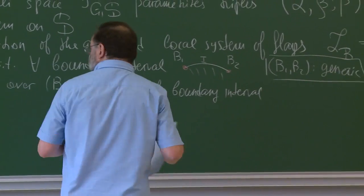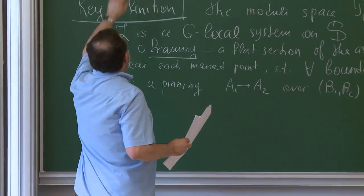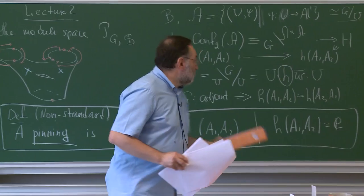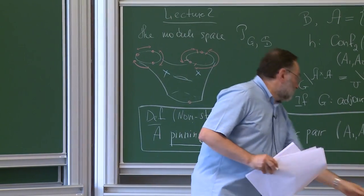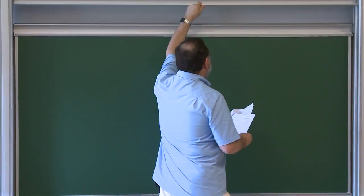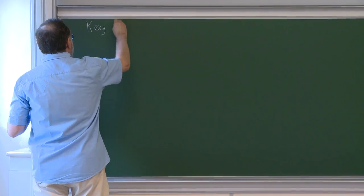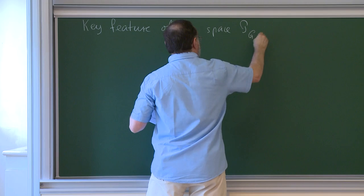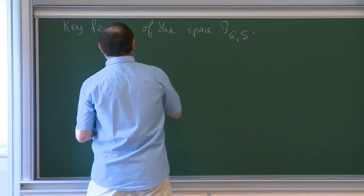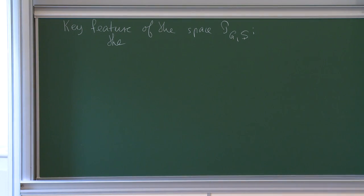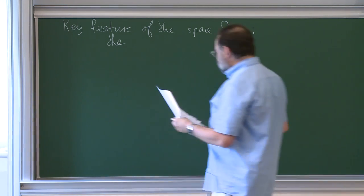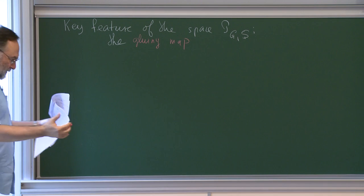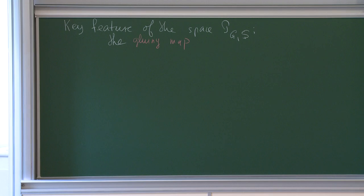Now, why do we want this moduli space? The key point is that there is a gluing map — this is the absolutely key property of these moduli spaces. This moduli space has several crucial properties. The first is this gluing map. The second is that it allows you to localize the very notion of a local system.